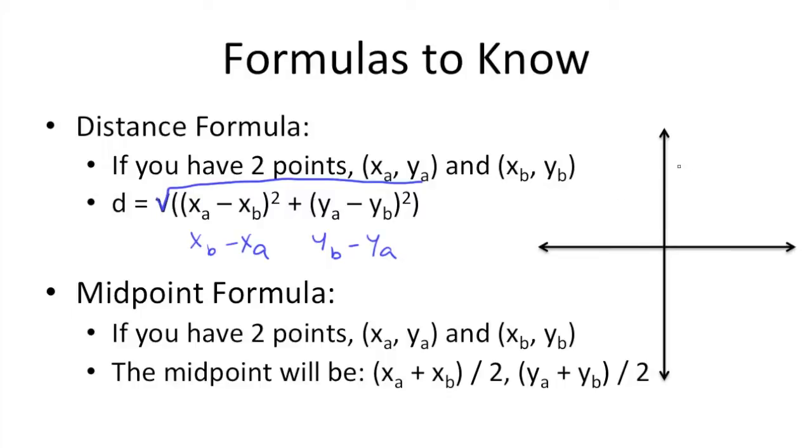So for instance, if we have a value here of, let's say, (1, 2), and another value here of (3, 5),